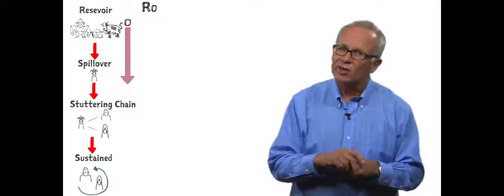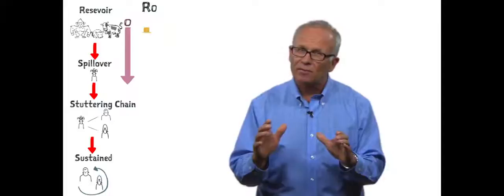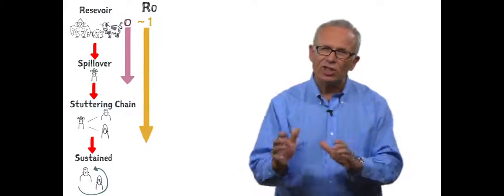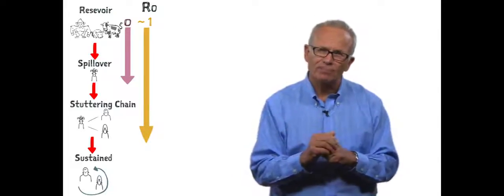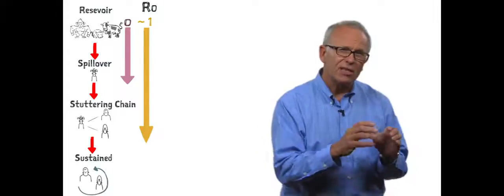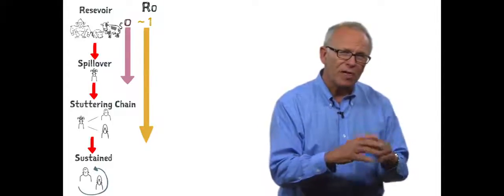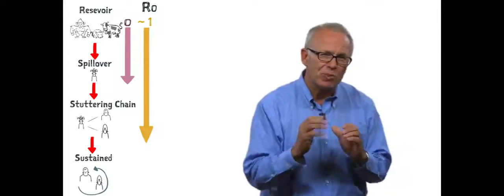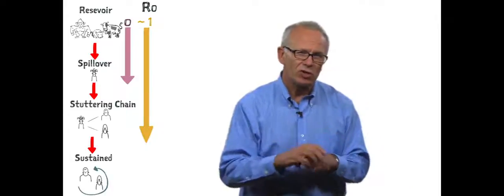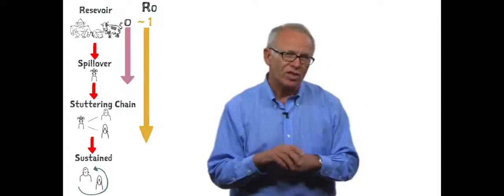The second category is where R naught is close to one, and we get stuttering chains of transmission amongst humans. In this instance, there is some onward transmission, but these transmission chains get broken, so there are just a few human cases before it eventually fades out.